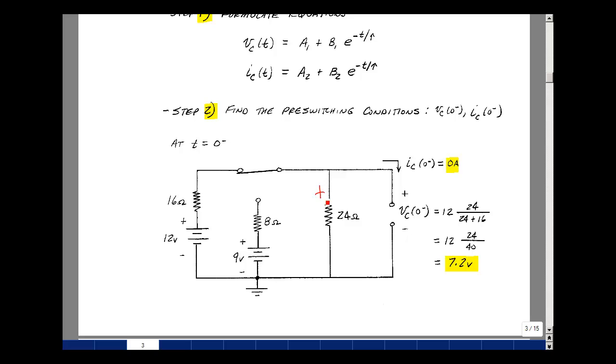Obviously the current here is going to be zero because it's an open circuit, but the voltage across the capacitor is the same as the voltage across the 24 ohm resistor. So I've got a voltage divider of 24 ohms with 16 ohms and 12 volts, and that turns out to be 7.2.